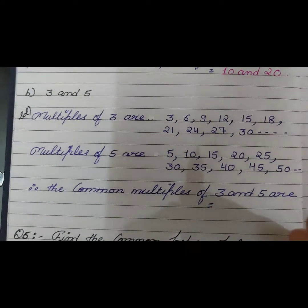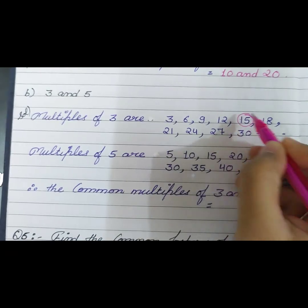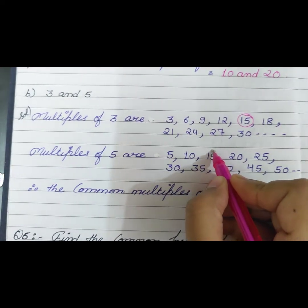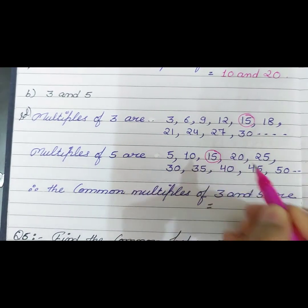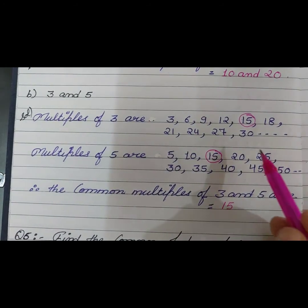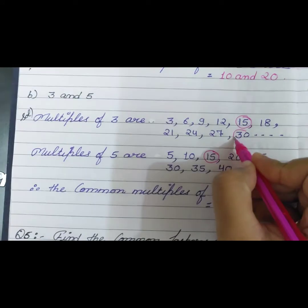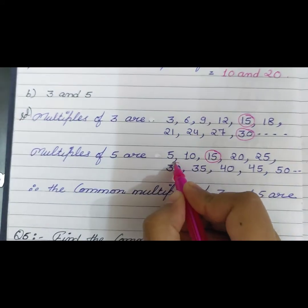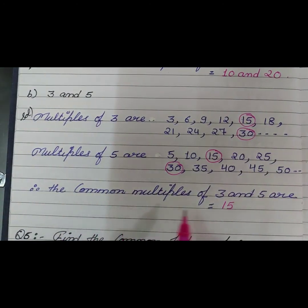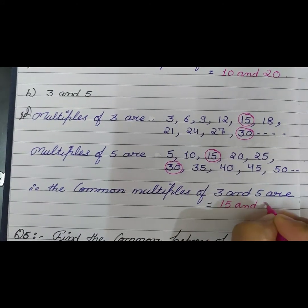Our first common multiple is 15. It appears in the multiples of 3 and also in the multiples of 5. Our second common multiple is 30. Therefore the common multiples of 3 and 5 are 15 and 30.